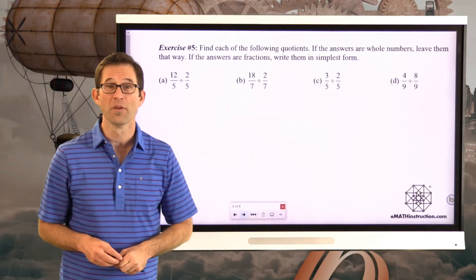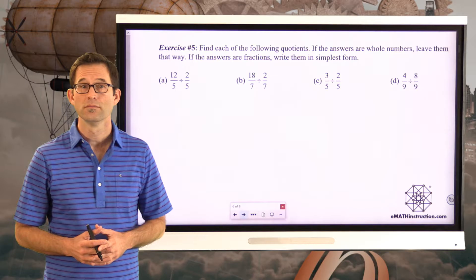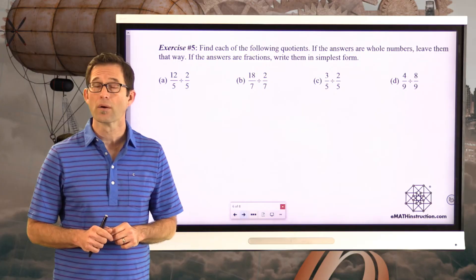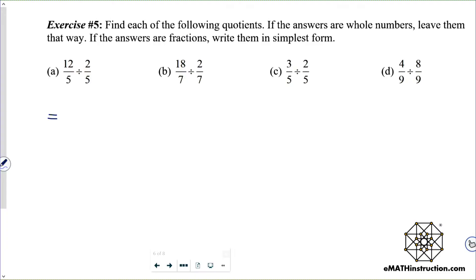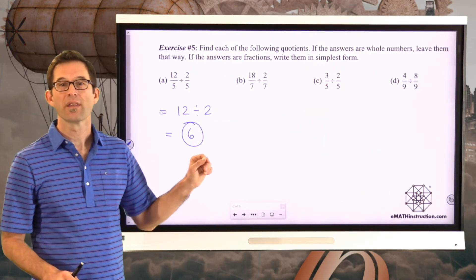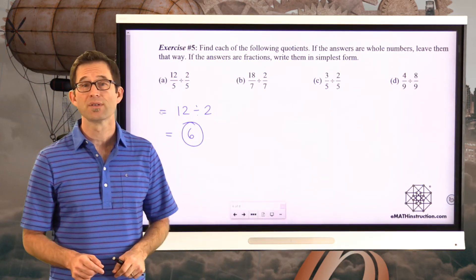Exercise number 5: find each of the following quotients. If the answers are whole numbers, leave them that way. If the answers are fractions, write them in simplest form. This works if the fractions have the same denominator. So 12 fifths divided by 2 fifths is the same as 12 divided by 2, which is just 6. Work through letters B, C, and D — some cases give whole numbers, others give fractions.